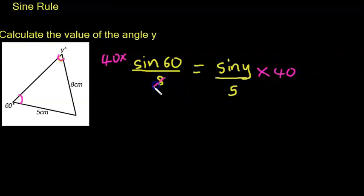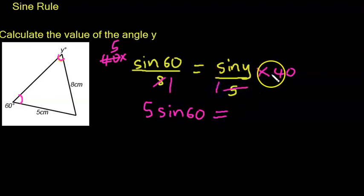So 8 into 40 goes 5 times, so we have 5 sine 60 over here. And 5 into 40 goes 8 times, so 8 times sine y. Remember, the aim of the game here is to find the value of y, but before we can get the value of y...